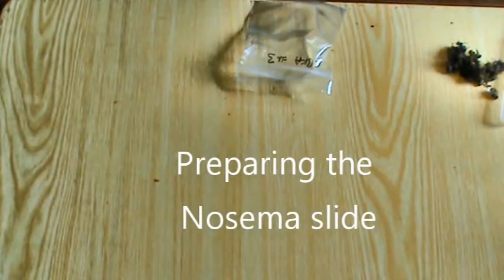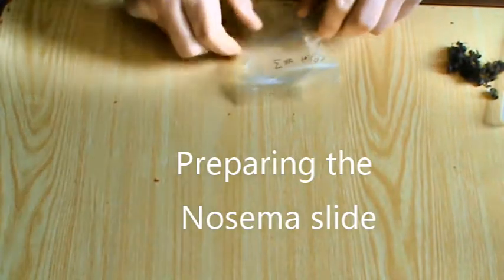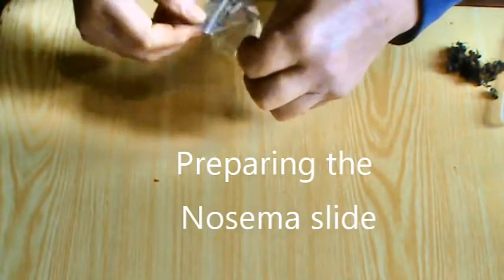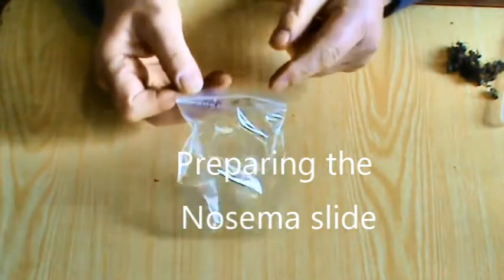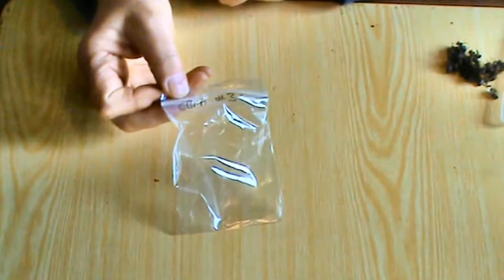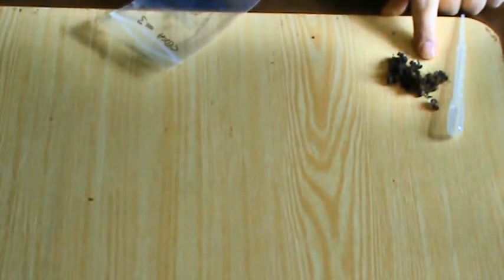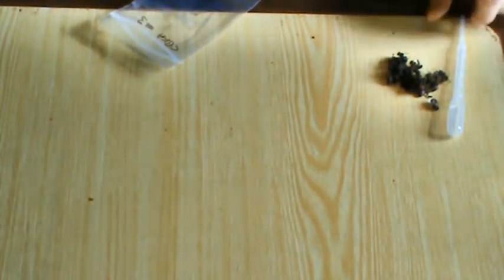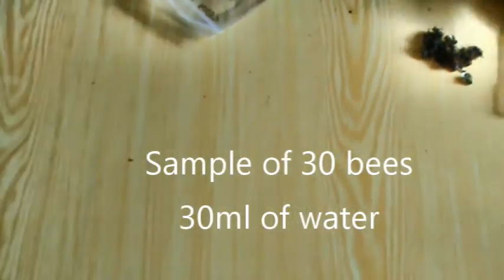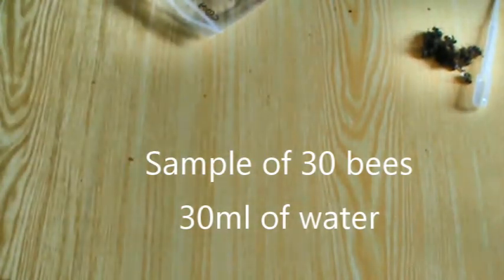So preparing the Nosema slide. We have the resealable bag here and we've written on there the identity of the hive. We have a sample of bees just down here, 30 bees, a pipette, and we've got a tub with 30 milliliters of water in it.